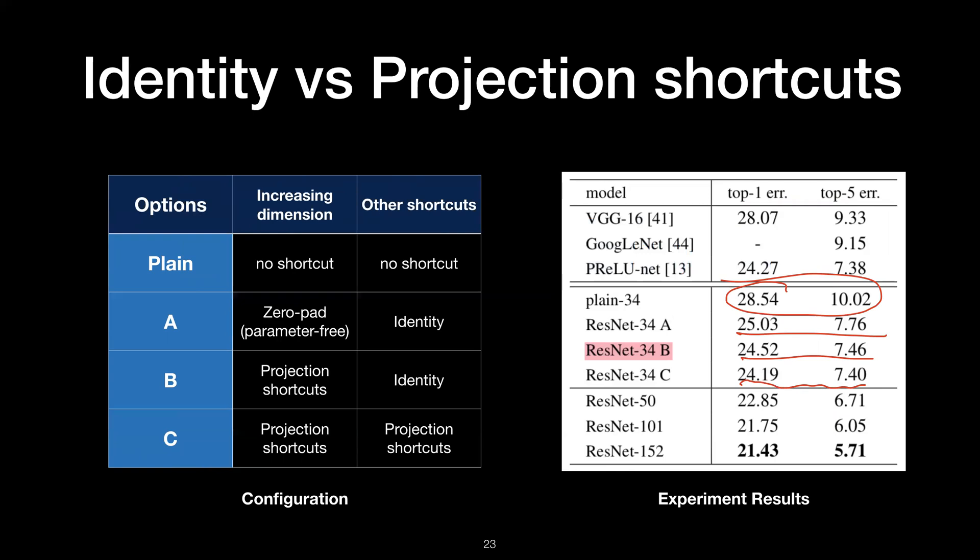From this projection experiment, since they achieved the best results with option C by adding projections for every shortcut, they could have easily concluded to use this option for the rest of the experiments. However, the authors suggest that the projection shortcuts are not essential for addressing the degradation problem, while using identity connections are sufficient to solve the degradation problem. They think the marginally better accuracy is due to these projection shortcuts also having weight, which means they have more expressive capacity than option B. However, they add more computation, so they choose to use option B for the rest of their experiments.